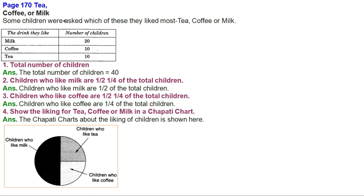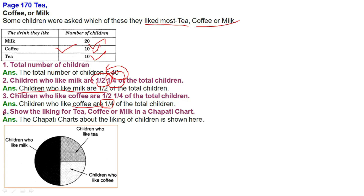Some children were asked which they like most — tea, coffee, or milk. Number of children who like milk: 20; coffee: 10; tea: 10. Total number of children in the class is 40. Children who like milk are half (1/2) of the total; children who like coffee are one-fourth (1/4); children who like tea are one-fourth (1/4). Show the liking for tea, coffee, and milk in a chapati chart — half the children like milk, and one-fourth each like tea and coffee.